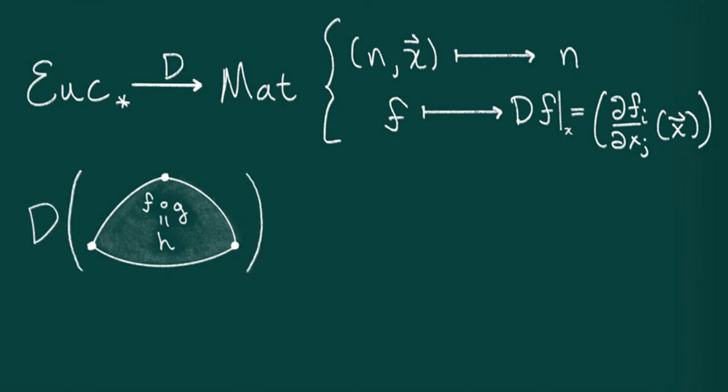Well, it should take a composition f composed with g equals h to a composition in matrices df composed with dg equals dh. The fact that the derivative of a composition is a composition of matrices is a very non-trivial fact and goes under the heading of the chain rule. In other words, one way of thinking about the derivative is that it's an association between these two categories.